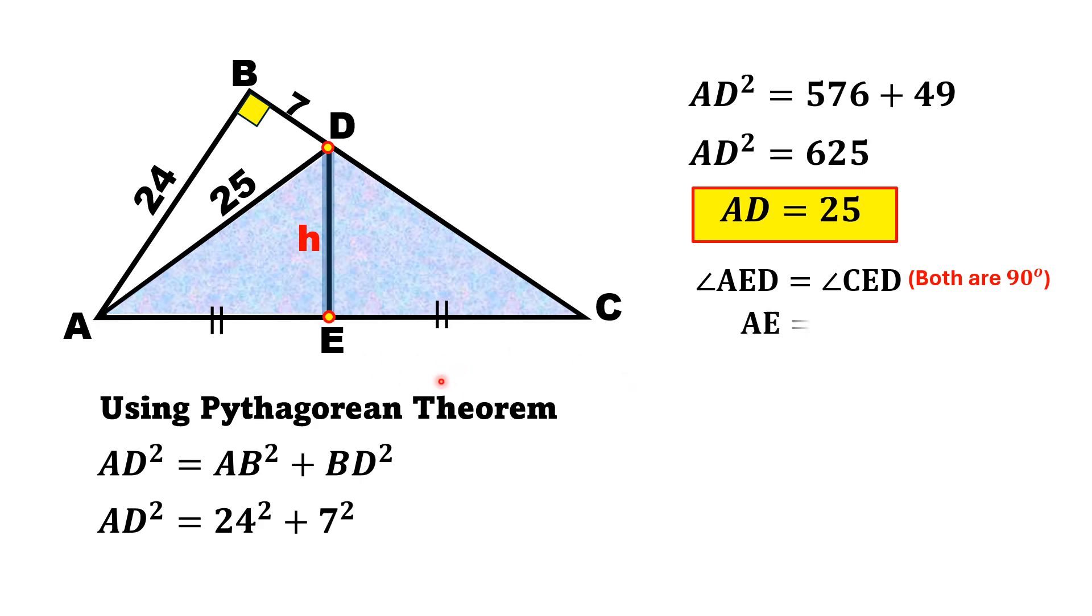Moreover, the side length AE is equal to EC because this is given. Also, ED is equal to ED because this is the common side of both triangles. Thus, by angle-side-side, both triangles are congruent to each other.